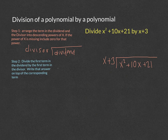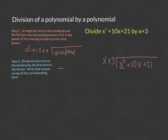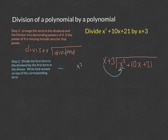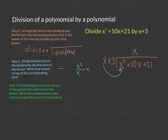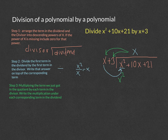The next step is to divide the first term in the dividend by the first term in the divisor. We take x and divide it into x squared: x squared over x equals x. Write that on top of the x in the dividend. Then multiply that term by each term in the divisor: x times x is x squared, and x times 3 is 3x. The 3x goes underneath the 10x.